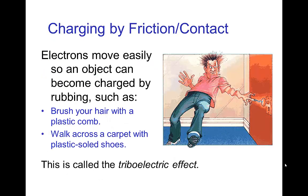One of the easiest simplest ways of achieving this is that since electrons move easily, they can just by frictional rubbing be transferred from one object to another. So when you brush your hair with a plastic comb or walk across a carpet with plastic shoes, you may notice some electrical charge that develops. Sometimes this gathering charge by frictional contact is called the triboelectric effect.